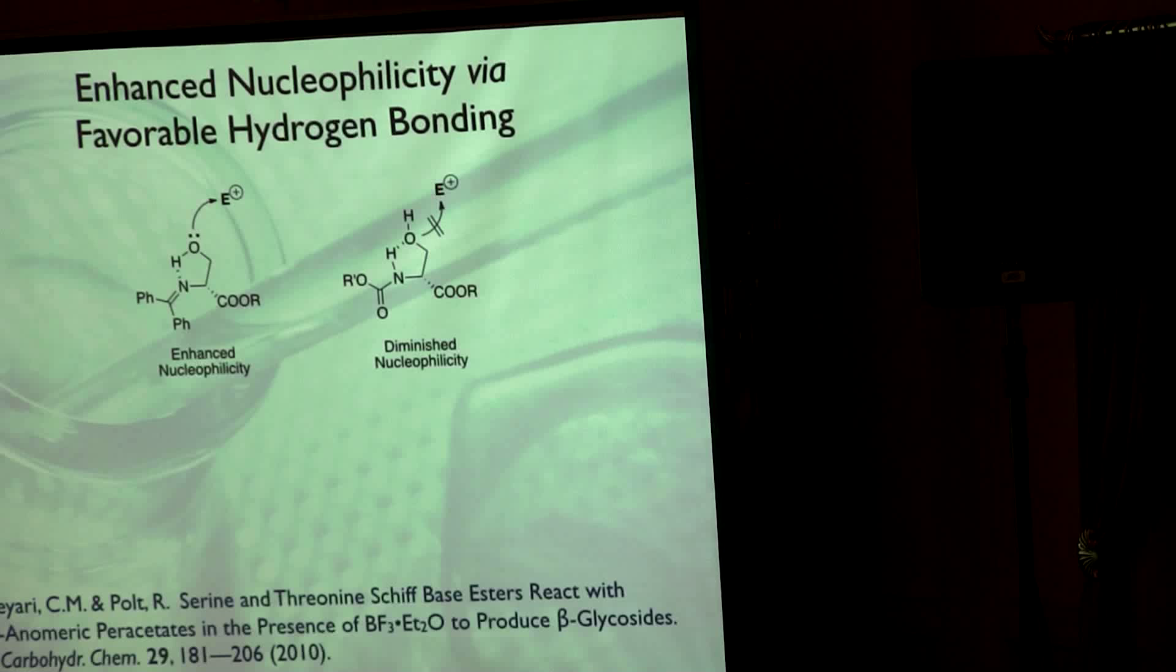Our chemistry, the stuff that we did to get tenure basically, was to introduce this hydrogen bond here which enhances the nucleophilicity of the neighboring alcohol and makes these things more reactive. On the other hand, if you have a typical nitrogen protecting group like a CBZ or a FMOC, you actually stick this hydrogen bond in there that's unproductive—it actually reduces the nucleophilicity of your hydroxyl group.